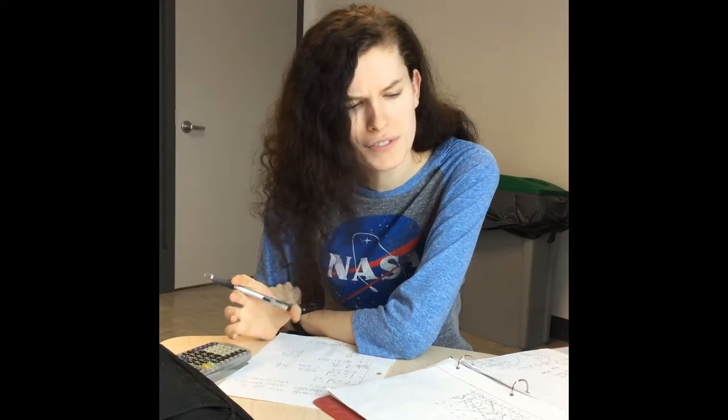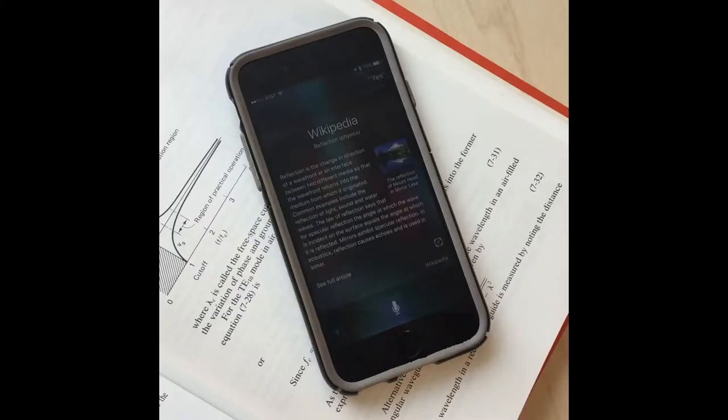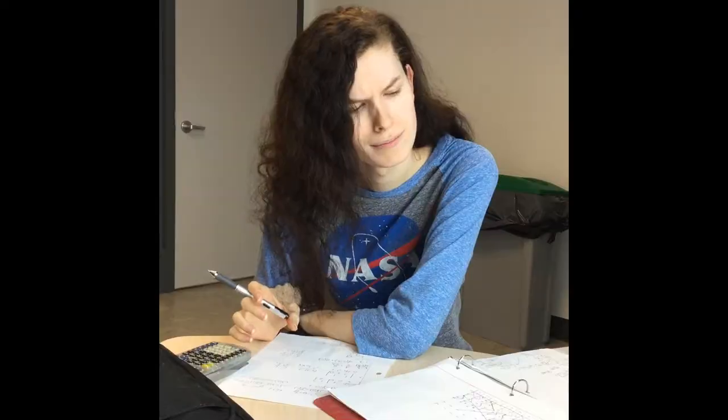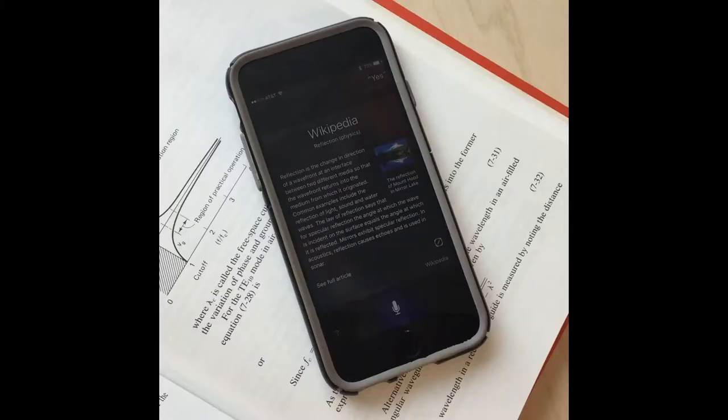Hey Siri, what's reflection? Reflection is the change in direction of a wavefront at an interface between two different media, so that the wavefront returns into the medium from which it originated. Common examples include the reflection of light, sound, and water waves.